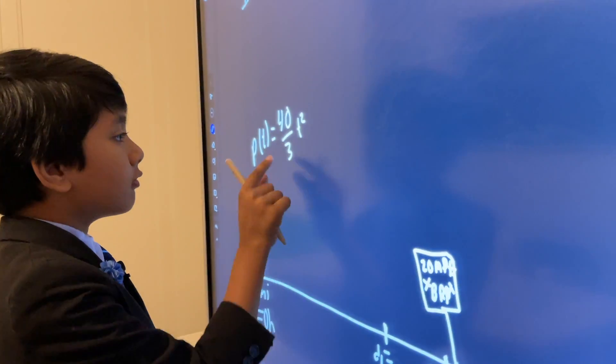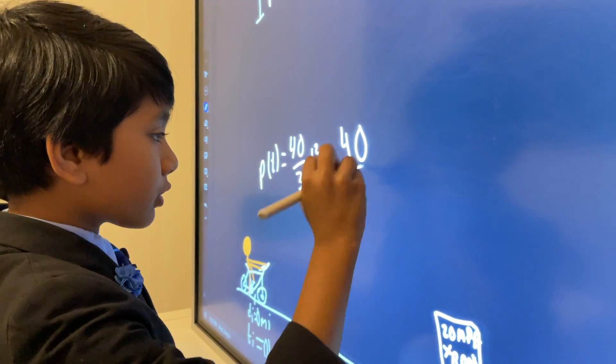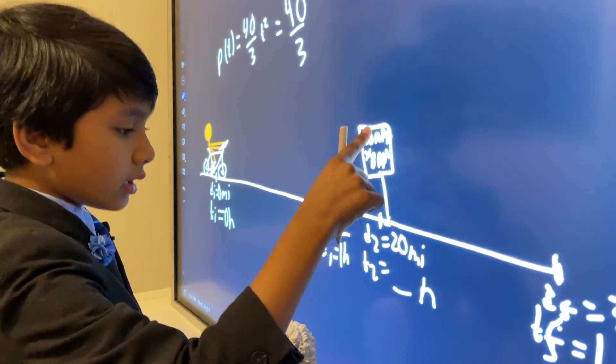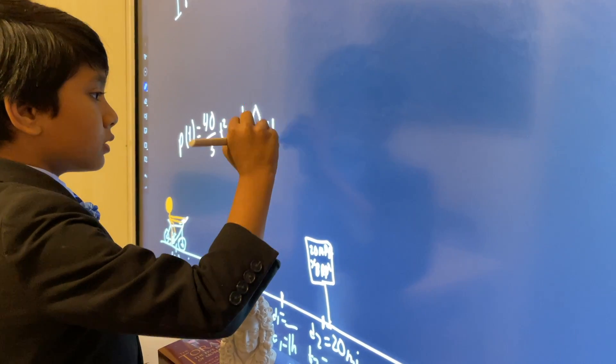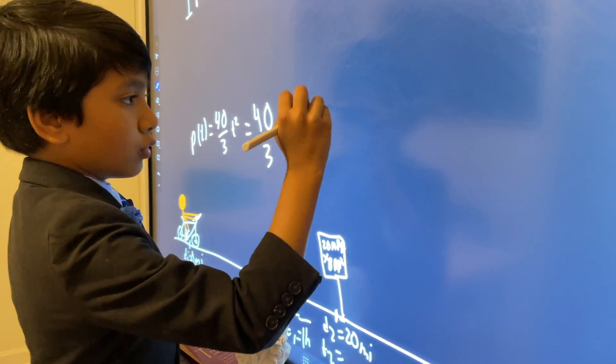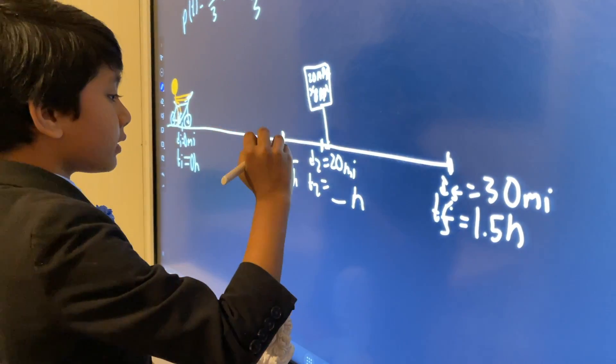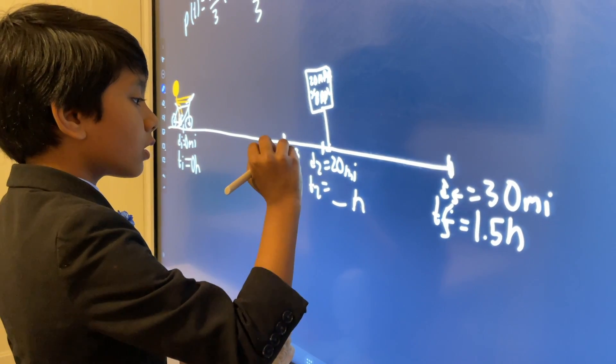So, D1, well, we know what P of T will be. So, 40 over 3, and then T squared, would be 1 squared. 40 over 3 times 1 is going to be 40 over 3, or 13 and 1 third. So, 13 and 1 third miles.